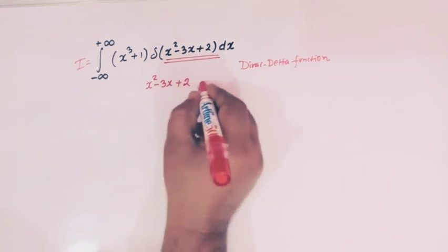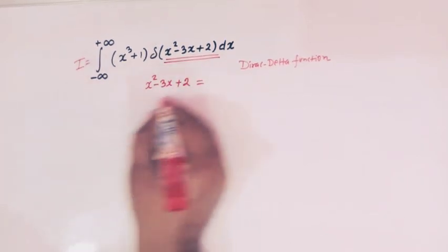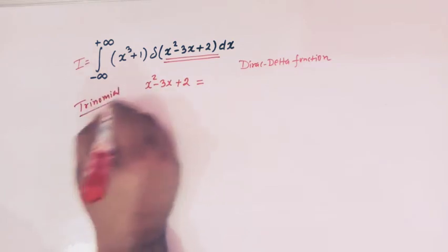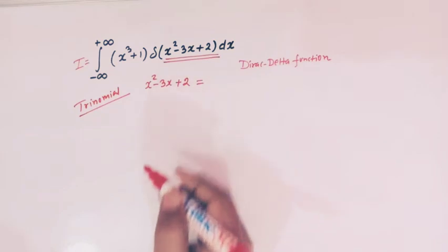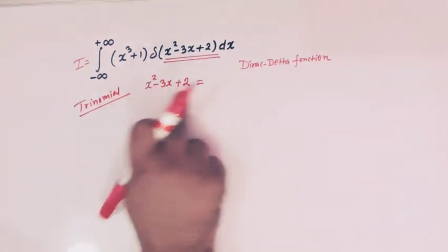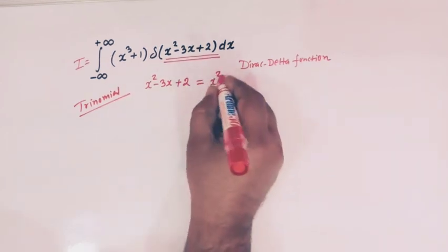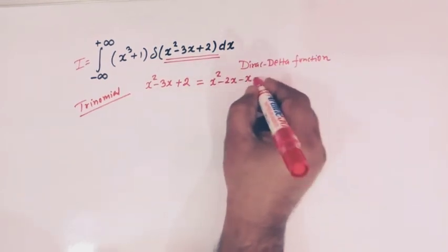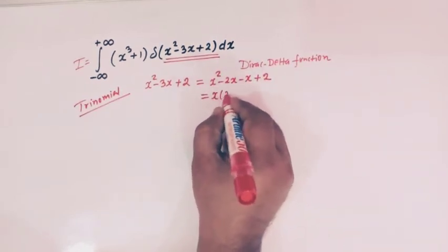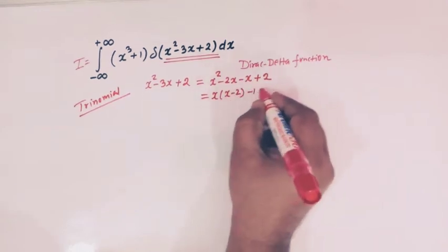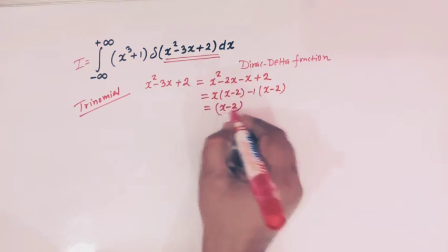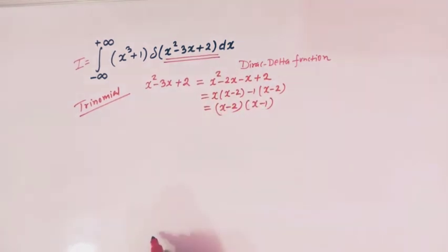So here we have a trinomial, and this trinomial is to be factorized with the help of splitting the middle term. So if we factorize it, we will get x squared minus 2x minus x plus 2, which we can write as x(x minus 2) minus 1(x minus 2), giving us (x minus 2)(x minus 1).